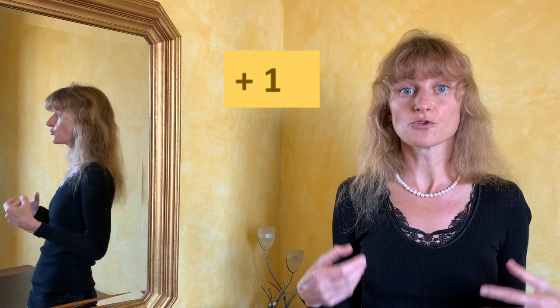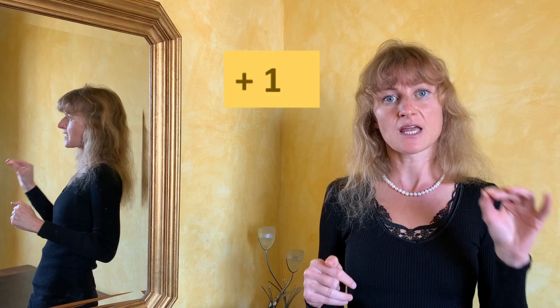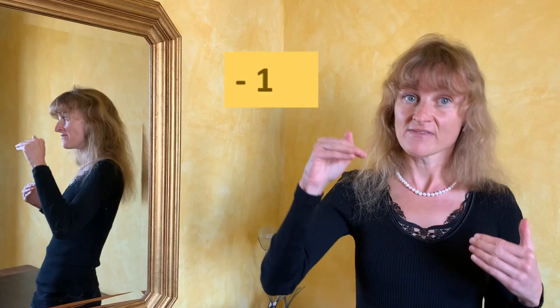So, let's say that in your company there are some virtuous employees working efficiently, highly intrinsically motivated, not watching their smartphones every five minutes. Moreover, there are highly observed formal institutions, norms, rules and positive informal institutions. So the values of IS, FI and II are plus one, and you don't have to invest much money in CCM. Whereas if they are negative, you have to bear a lot of costs to maintain the moral dimension of the transaction.